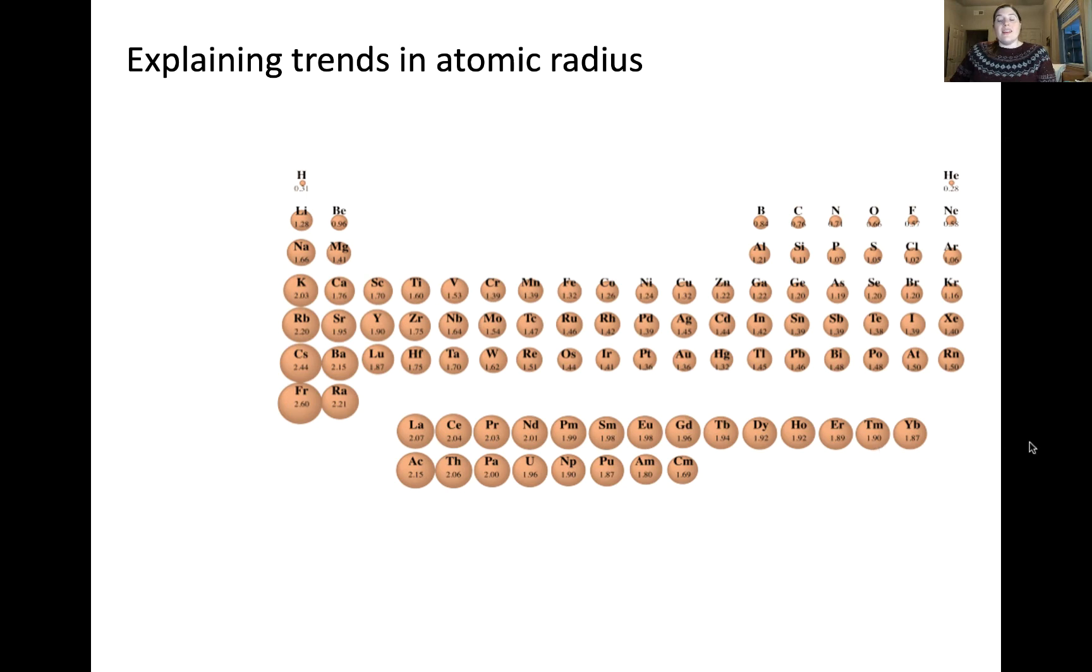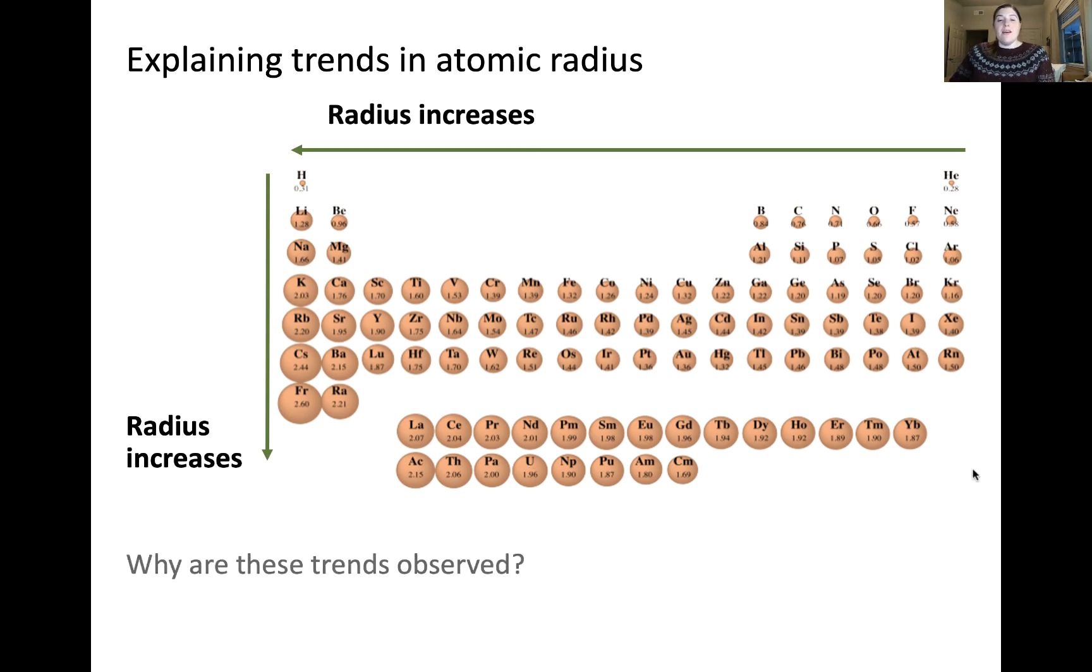So here we're looking at the data that I showed on the previous slide a bit more graphically. So here we can observe that the radius increases as we move from left to right across a given row of the periodic table. And it also increases as we move from top to bottom down a column of the periodic table. So why does this happen? Why do we observe this trend? Let's think about it.